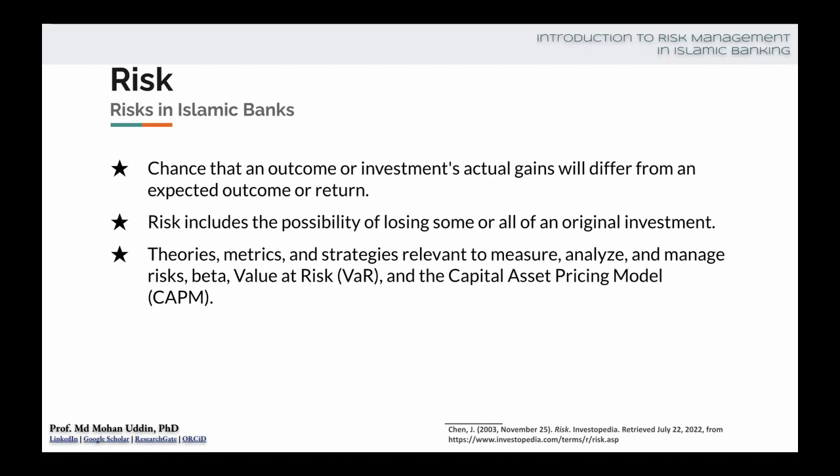So how do we measure or analyze risk? To measure risk, we may use different measures like standard deviation. In statistics, standard deviation is the measure of dispersion from the average or mean — what is the degree of spreading of the outcome from the average. Variance is also another type of measurement for risk.